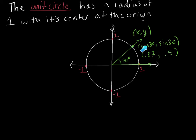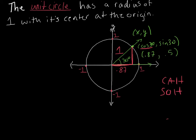The key thing to remember is that the cosine gives the x-coordinate (the adjacent side) and the sine gives the y-coordinate (the opposite side). If we create a right triangle, the cosine of 30 gives the adjacent side: using CAH, cosine equals adjacent over hypotenuse, and since the hypotenuse is 1 (the radius of the unit circle), cosine of 30 = 0.87 is that side. Similarly, using SOH, sine equals opposite over hypotenuse, and sine of 30 = 0.5 gives the opposite side.